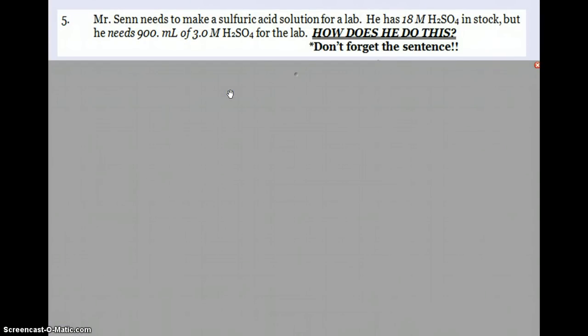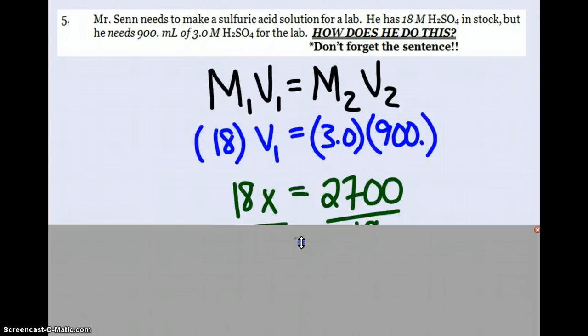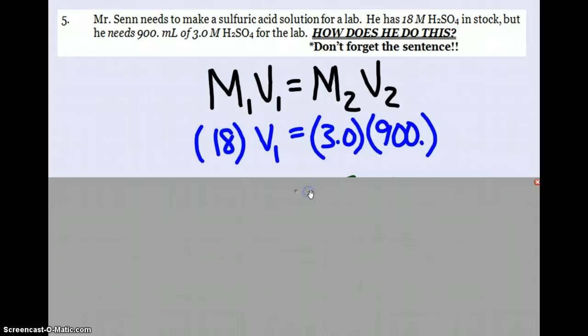Next, we're doing a dilution. We have 18 molar sulfuric acid in stock, but I need 900 milliliters of a 3 molar sulfuric acid solution for the lab. How do I do this? Don't forget the sentence. The math component is M1V1 = M2V2. M1 is always bigger than M2. 18 is the stock, V1 is what I'm looking for, how much of that do I need. I want to dilute it down to 3 molar and I need 900 milliliters of the 3 molar. That's a check to make sure those two numbers are together in the equation.